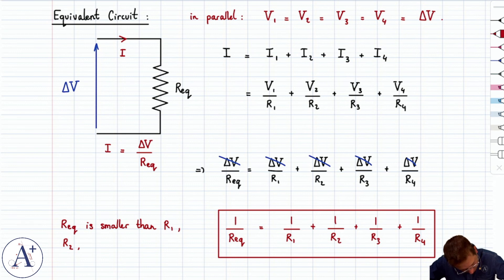So smaller than R1, R2, R3, or R4. That's just what you get. You get overall an equivalent resistance that is smaller than any of the four values considered individually.